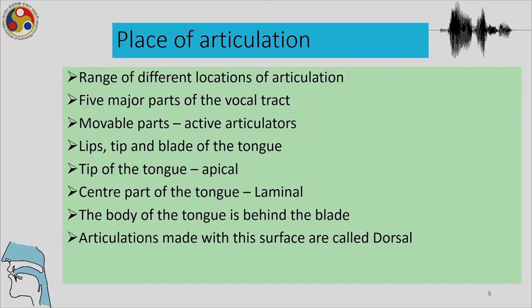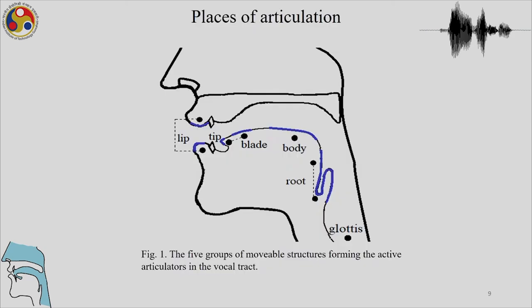The body of the tongue is behind the blade, and articulations made with this surface are called dorsal. The places of articulation — highlighted in blue in the diagram — include the two lips, the tongue tip, the body of the tongue, the blade of the tongue, the root, and the glottis. These are the movable structures along with the lips.